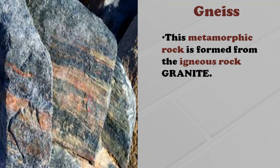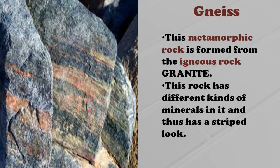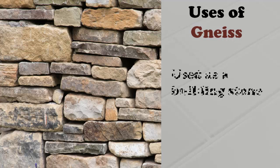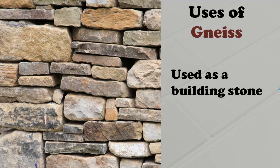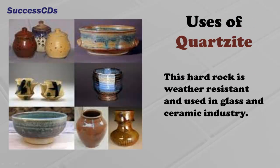Gneiss is another metamorphic rock which is formed from the igneous rock granite. This rock has different kinds of minerals in it and thus has a striped look, and is used as a building stone. Quartzite is another metamorphic rock formed from the sedimentary rock sandstone. This hard rock is weather-resistant and used in the glass and ceramic industry.